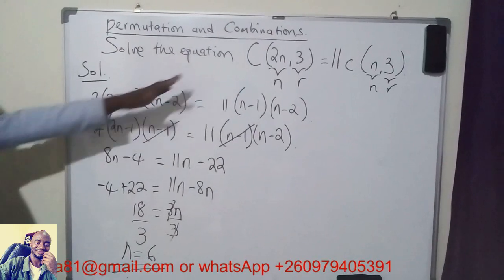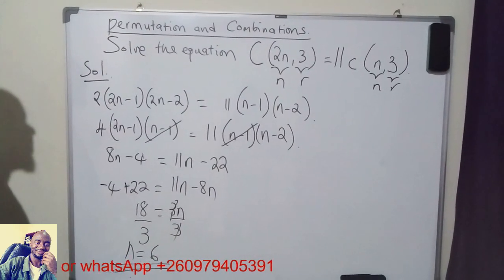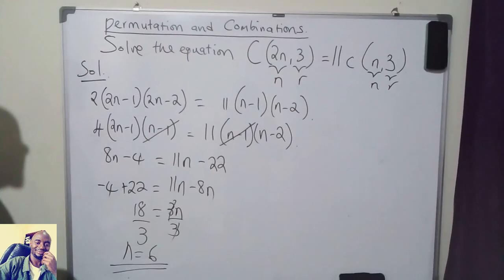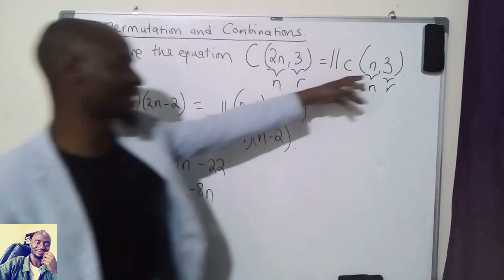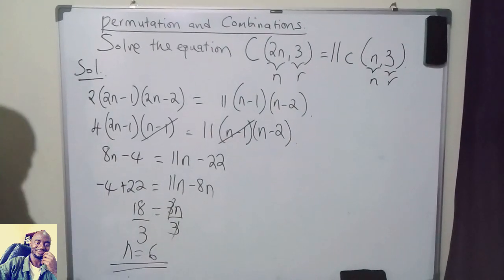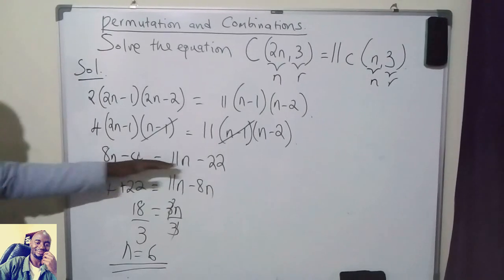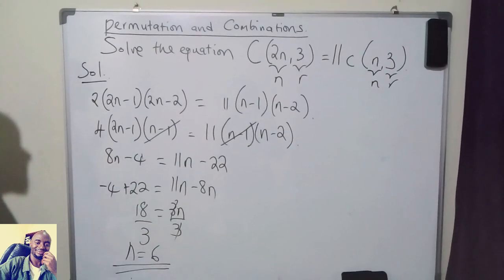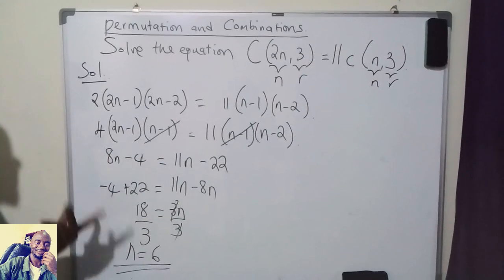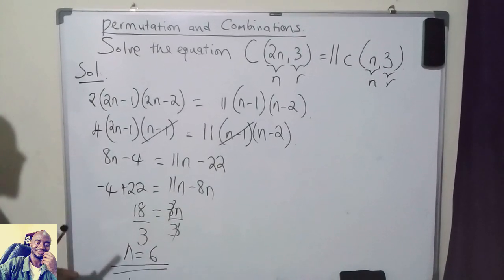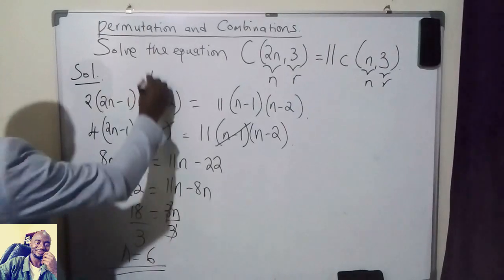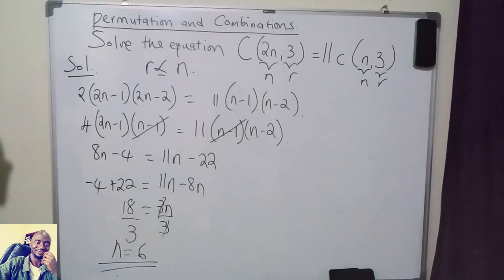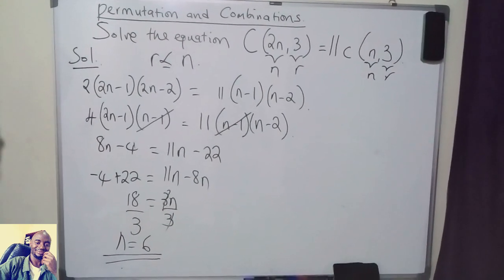So when you're given such an equation, all you need to do is apply the definition of a combination. If it was a permutation question, you apply the definition of a permutation. One thing you have to know is n is never negative. Sometimes you may end up with a quadratic and find two solutions — one negative and one positive — so discard the negative. Also, r should be less than or equal to n. This is how you solve equations involving combinations. For this and more videos, subscribe to my YouTube channel. Thank you.